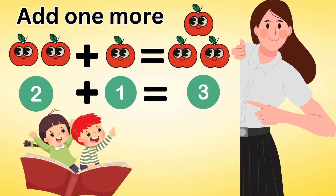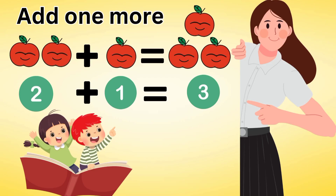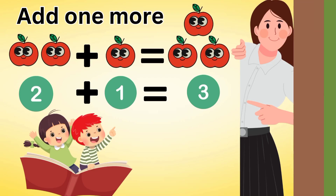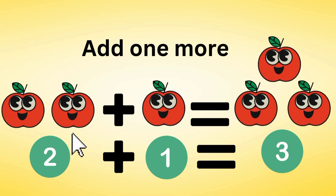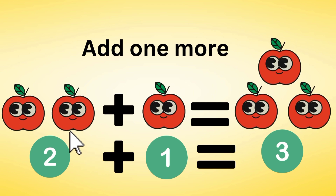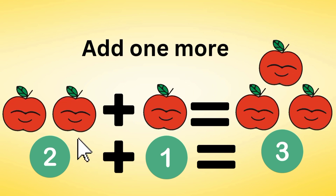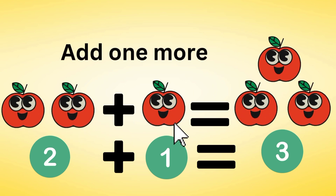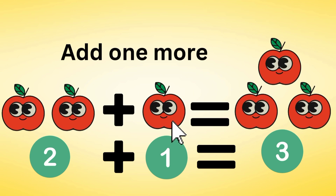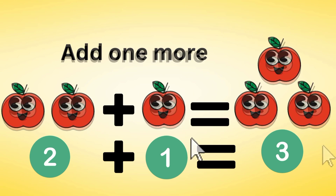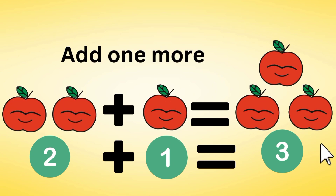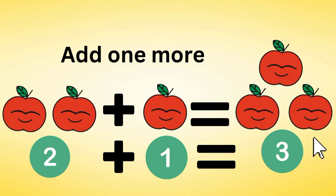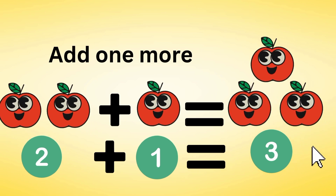Let's learn the concept of add one more. Let's count the apples. There are two apples. If we add one more apple, then we count them all together. And after counting them all together, there will be three apples.